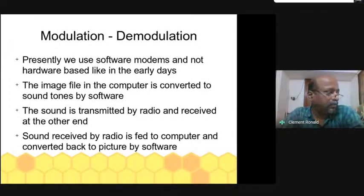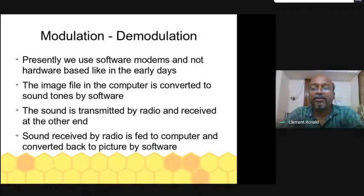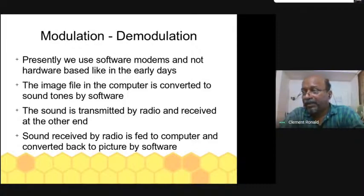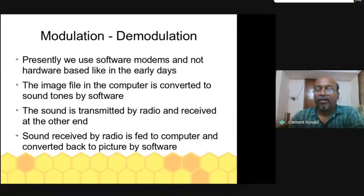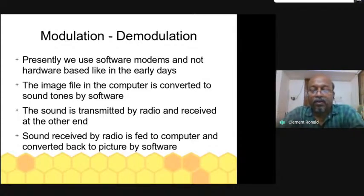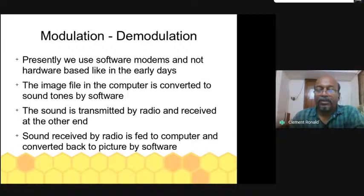The image file in the computer is converted into sound tones, which are fed to the radio for transmission. The sound is received on the other side and fed back to the computer. This software can be used on a PC, a smartphone, or even a Raspberry Pi. The software also has features like editing images for transmission, storing images in a gallery, and automatically resizing images — all packaged in a user-friendly way.